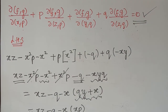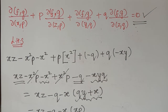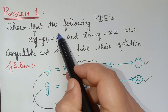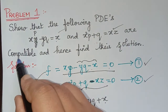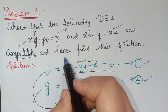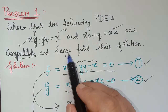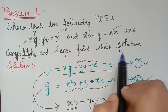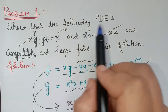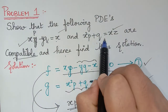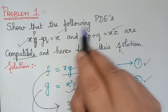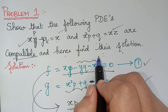Therefore, the given system of partial differential equations f and g are compatible. We have proved the first part — that these two given equations are compatible. Now, they are also asking us to find their solution, which I will be doing in my next video. Kindly follow the next video for the remaining part of this problem. Thank you.